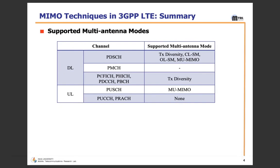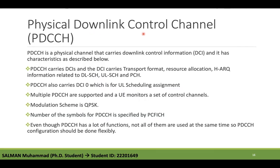The PDSCH is used in transmit diversity because it is mostly related to the downlink channel. It can be used in closed-loop spatial multiplexing, open-loop spatial multiplexing, and also in multi-user MIMO. The broadcast channel does not support any multi-antenna modes. Four channels use transmit diversity: the first is PDCCH — Physical Downlink Control Channel — which carries Downlink Control Information (DCI).